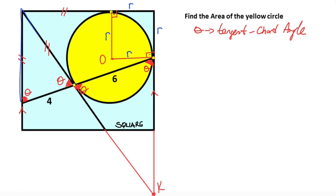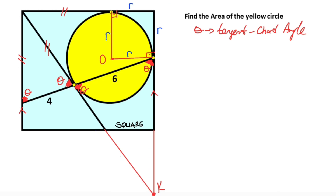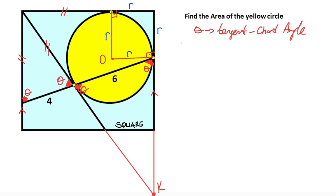If you notice, we get a butterfly. That means the ratio of these two sides — four over six — must equal the ratio of these two sides. The ratio of these two sides is also equal to four over six, which is two over three. Let's call this length two x, which means here must be equal three x because of the butterfly.